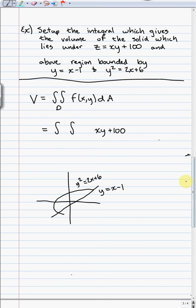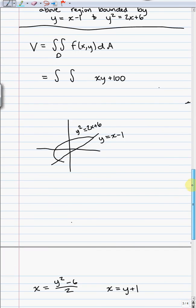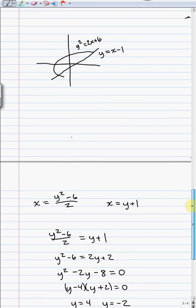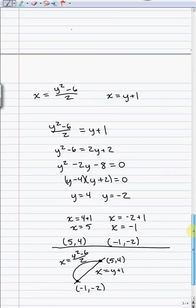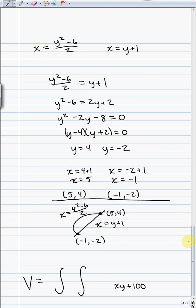Alright, now just like before, I need to find these intersection points. Now to find the intersection points, I want to solve both of these for x. So we get x is equal to y squared minus 6 over 2, x is equal to y plus 1. I solved them both for x because if I had solved it for y, you'd get a plus or minus and you wouldn't be able to do a substitution very easily. But if I solve them both for x, now I can set them equal to each other.